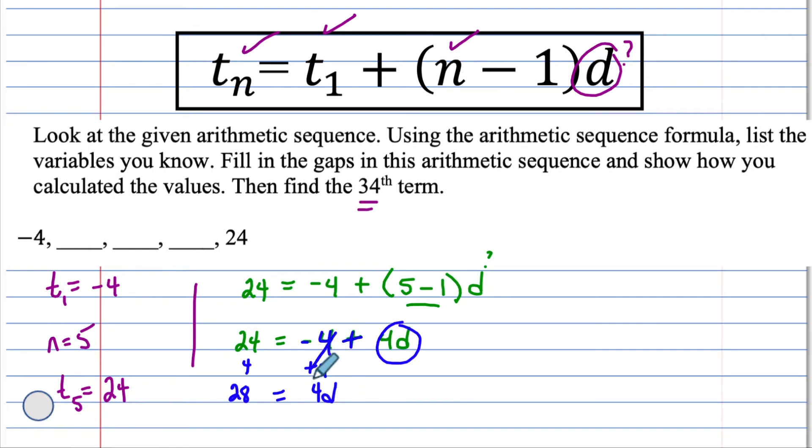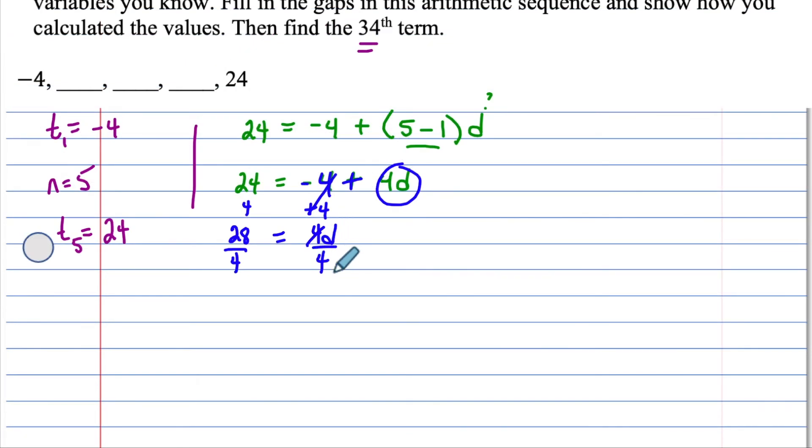And now to get D by itself, the opposite of multiply is divide by 4. 4 divided by 4 is 1, and that's what we want. 1D equals 28 divided by 4 is 7. The value for D is 7.